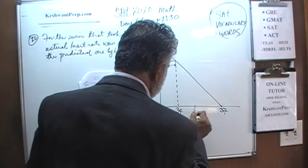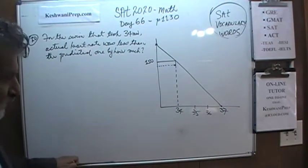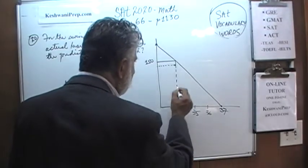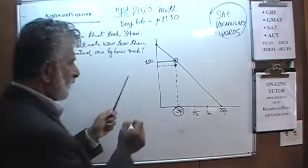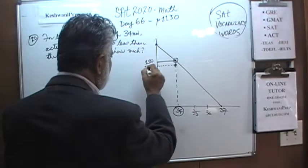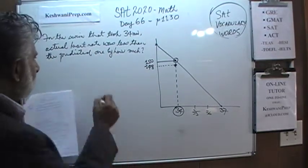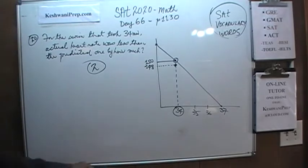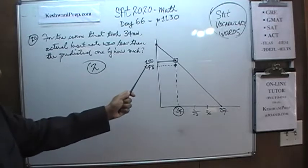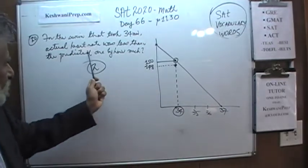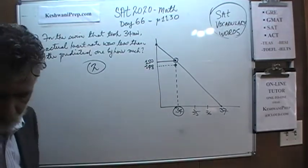So at 34, 35, 36, and 37 on the x-axis — for the swim that took 34 minutes, which is right here, if you go up, the predicted heart rate was 150. The actual heart rate turns out to be 148, if you look at the graph carefully. That's all it is — the answer is 2.